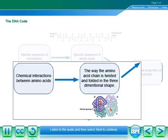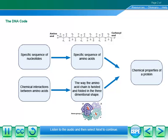Chemical interactions between the amino acids determine the three-dimensional shape, which allows it to fit with and bind to specific molecules. Because each amino acid is chemically different, it interacts in unique ways with other amino acids in the chain. To do work in the cell, proteins must have shapes that fit with other molecules, which is important in the production of biological products.